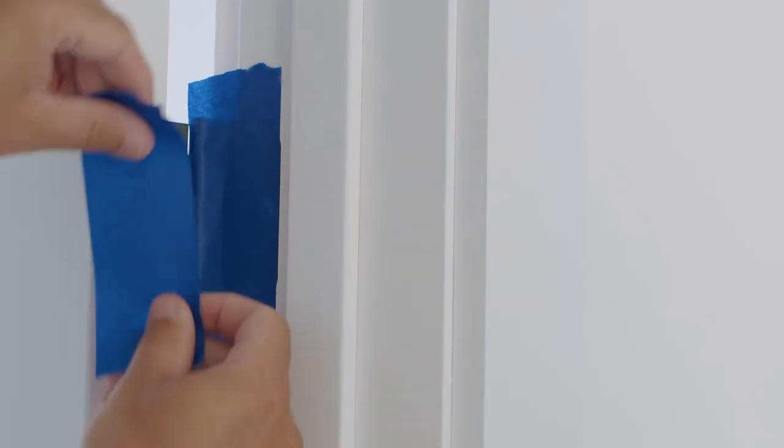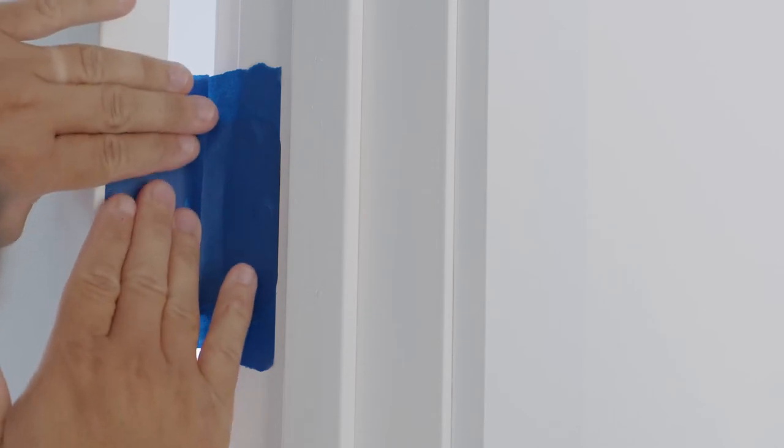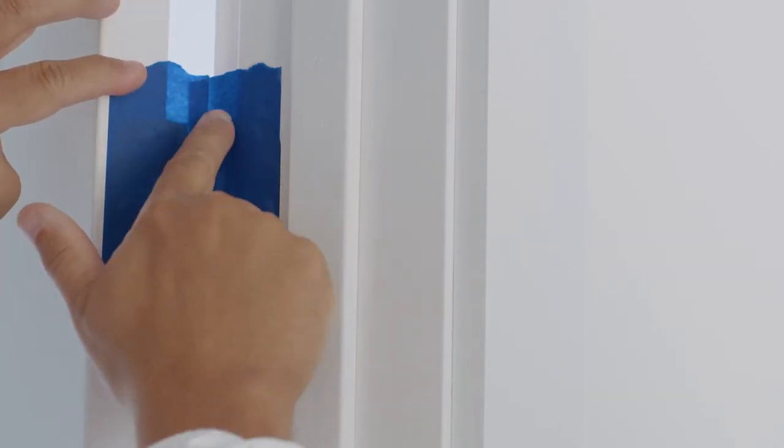For hinges, all you have to do is cover the hinge with the tape. After you've made sure the entire hinge is covered, use your finger to smooth the edge around the hinge.